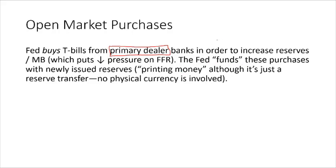Where does the Fed get the money to do open market purchases? The Fed has the power to issue new money. It's not physically printing money — it's creating new reserves in these primary dealers' accounts with the Fed. But it's effectively the same thing as if the Fed printed money and deposited those funds at the primary dealers' counters in exchange for treasury bills. They're just creating reserves electronically, which is functionally equivalent to handing cash to the banks.